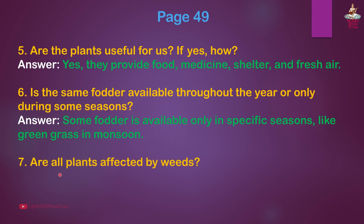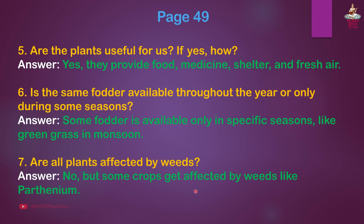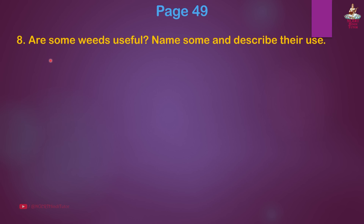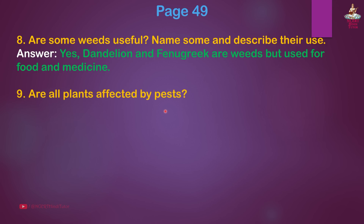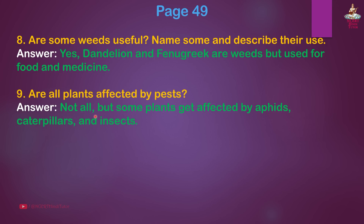Question 7: Are all plants affected by weeds? Answer: No, but some crops get affected by weeds like parthenium. Question 8: Are some weeds useful? Name some and describe their use. Answer: Yes, dandelion and fenugreek are weeds but used for food and medicine. Question 9: Are all plants affected by pests? Answer: Not all, but some plants get affected by aphids, caterpillars and insects.